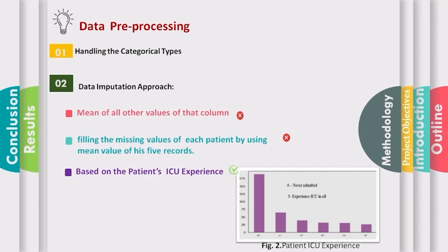The three imputation methods were: first, using the mean of all other values of that column; second, filling missing values of each patient using the mean value of their five records; or third, based on the patient's ICU experience. We found that the best method is the third one — records of patients who were admitted to the ICU across all five records had their missing values filled using the column mean, and the same process was done for patients who never entered the ICU. Records of the remaining patients were neglected.